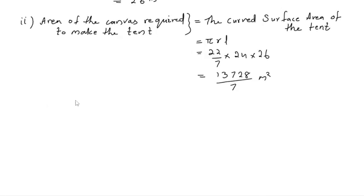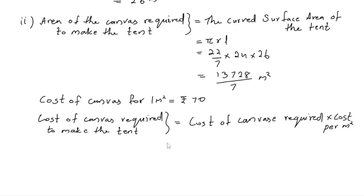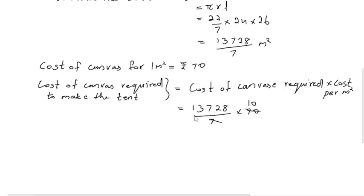The cost of canvas for 1 meter square is rupees 70. The cost of canvas required to make the tent is equal to area of canvas multiplied by cost of 1 meter square, which is equal to 13728 divided by 7 into 70. Cancelling 7 and 70, we get 10. Therefore, the cost of canvas required to make the tent is rupees 137280.